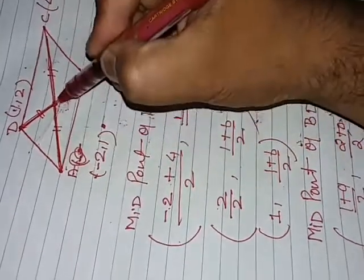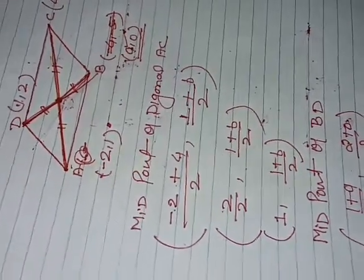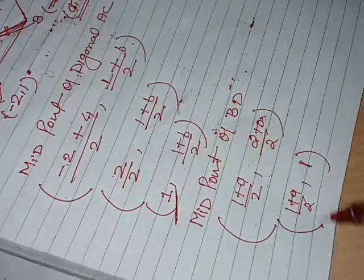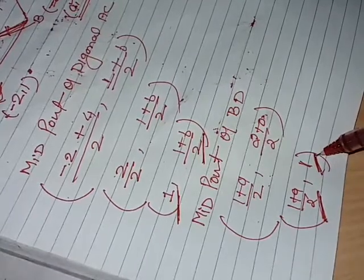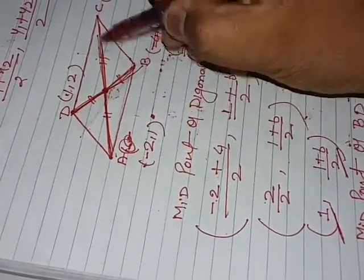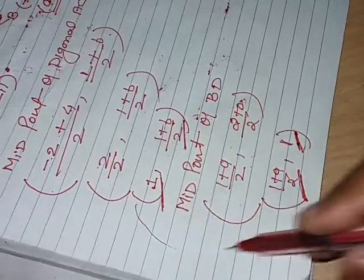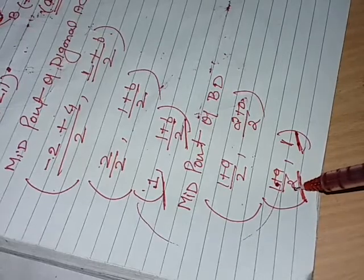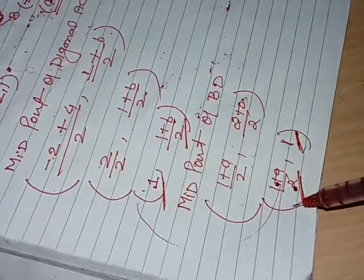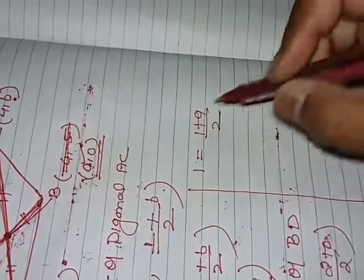Since both diagonals bisect each other, their midpoints are the same point. So the midpoint of AC equals the midpoint of BD. That means the x-coordinate of AC's midpoint equals the x-coordinate of BD's midpoint, i.e., 1 = (1+a)/2. Similarly the y-coordinates must be equal: (1+b)/2 = 1.